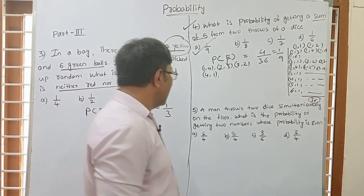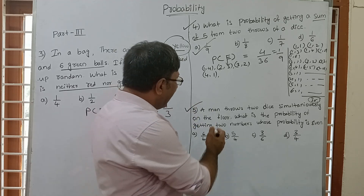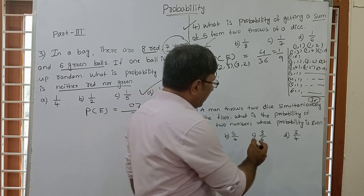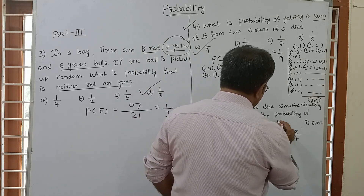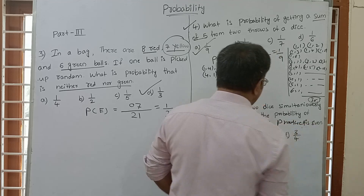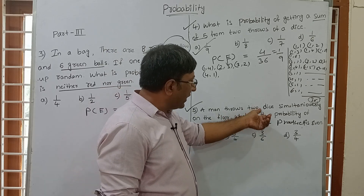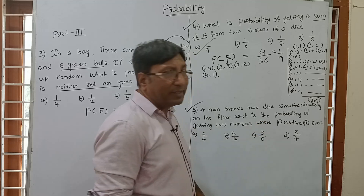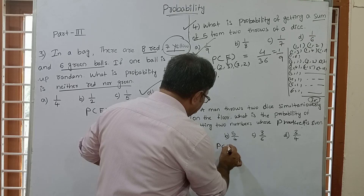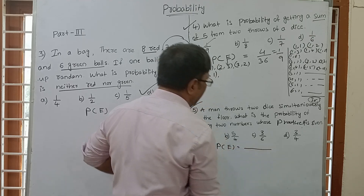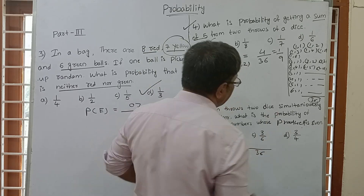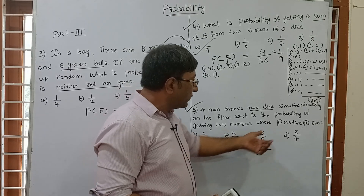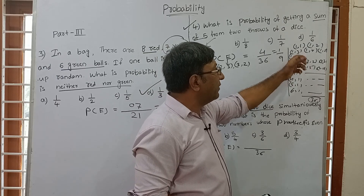Question number 5: a man throws 2 dice simultaneously. What is the probability of getting 2 numbers whose product is even? Total outcome is 36 because there are 2 dice. Now check how many outcomes have an even product.